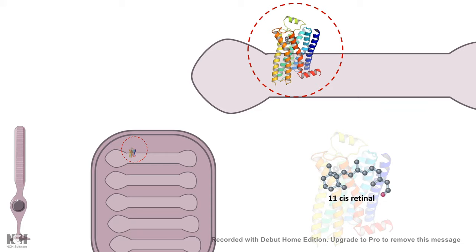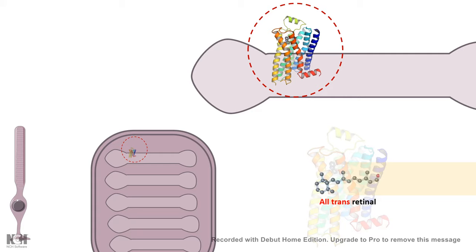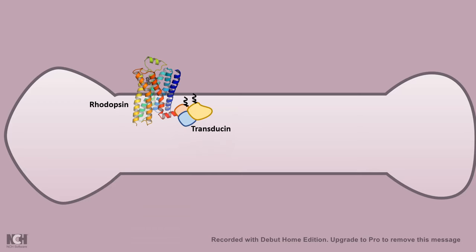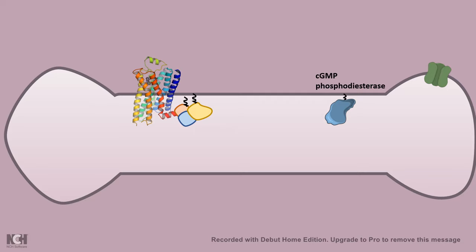Retinol is in an 11-cis format in absolute dark. When light falls on rhodopsin, it undergoes a conformational change — 11-cis retinol becomes all-trans retinol. Due to the conformational change in rhodopsin, a G-protein associated with it known as transducin gets activated. Once transducin is activated, as it is a Gs-type signaling regime, the G-alpha subunit gets dissociated from this complex and moves in a membrane-bound fashion.